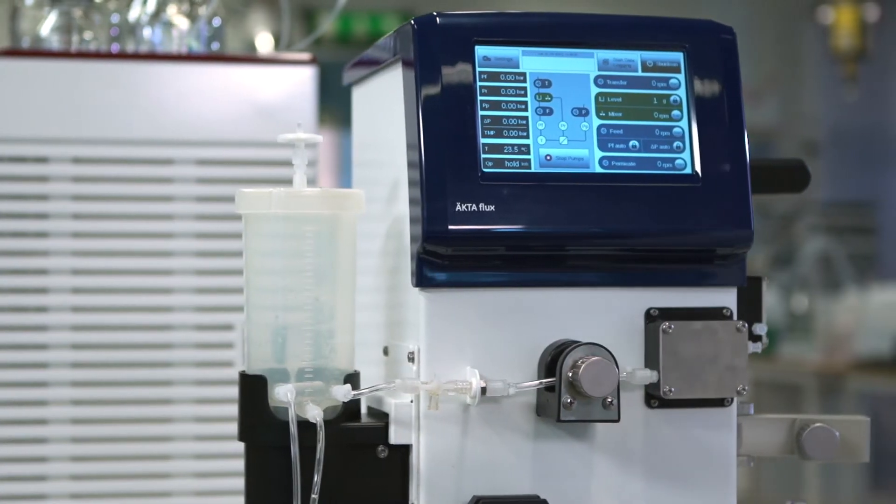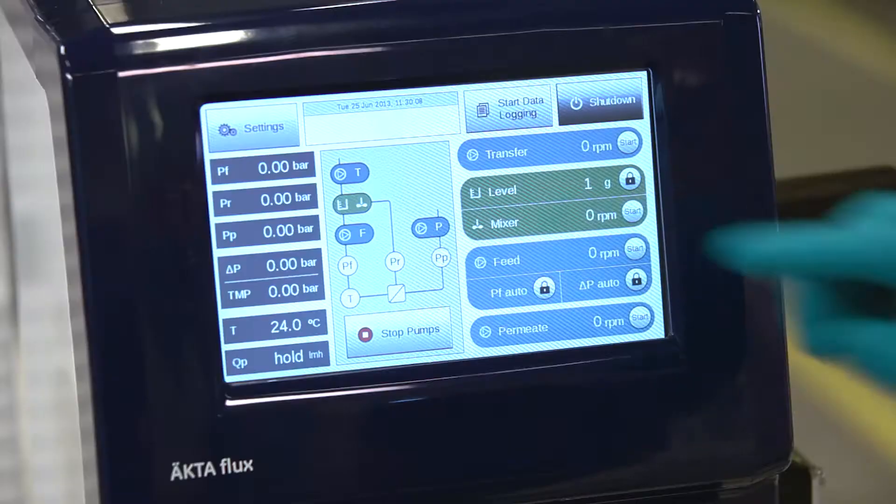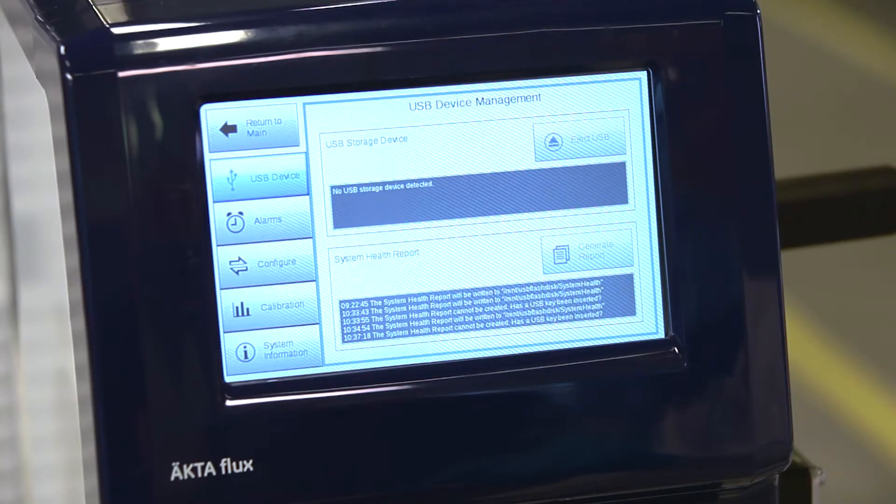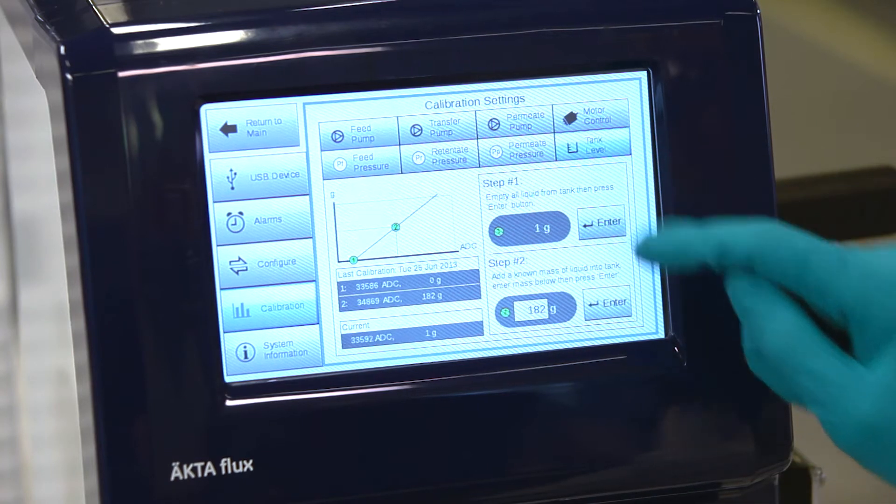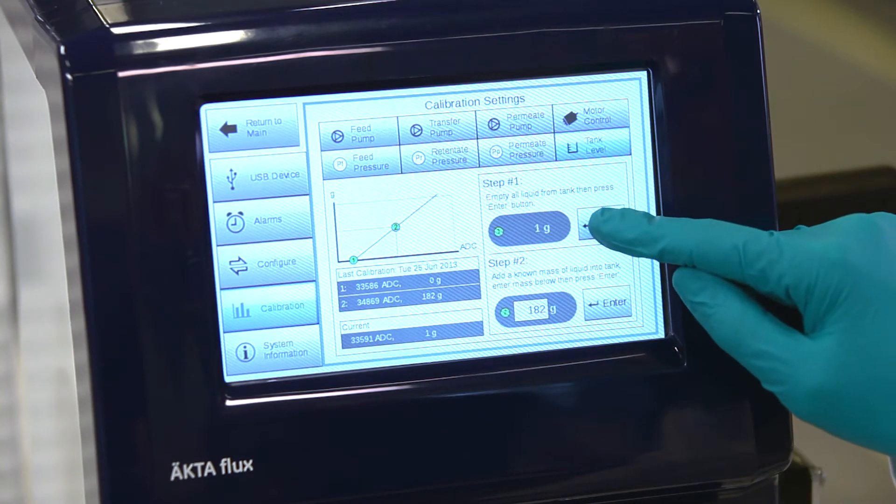To calibrate the load cell for accurate weight measurement, start with an empty reservoir. Choose settings on the touchscreen, press calibration, then press enter under step 1 for zero point calibration.